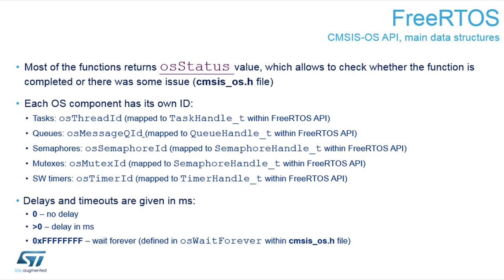Additionally, each object you create has its own ID. You can see the ID defined depending on the object used, and it's mapped to the original handle of the native RTOS — effectively just a type-casted type. So it's very easy: if you take the OS semaphore ID and simply pass it to the native function after typecasting.